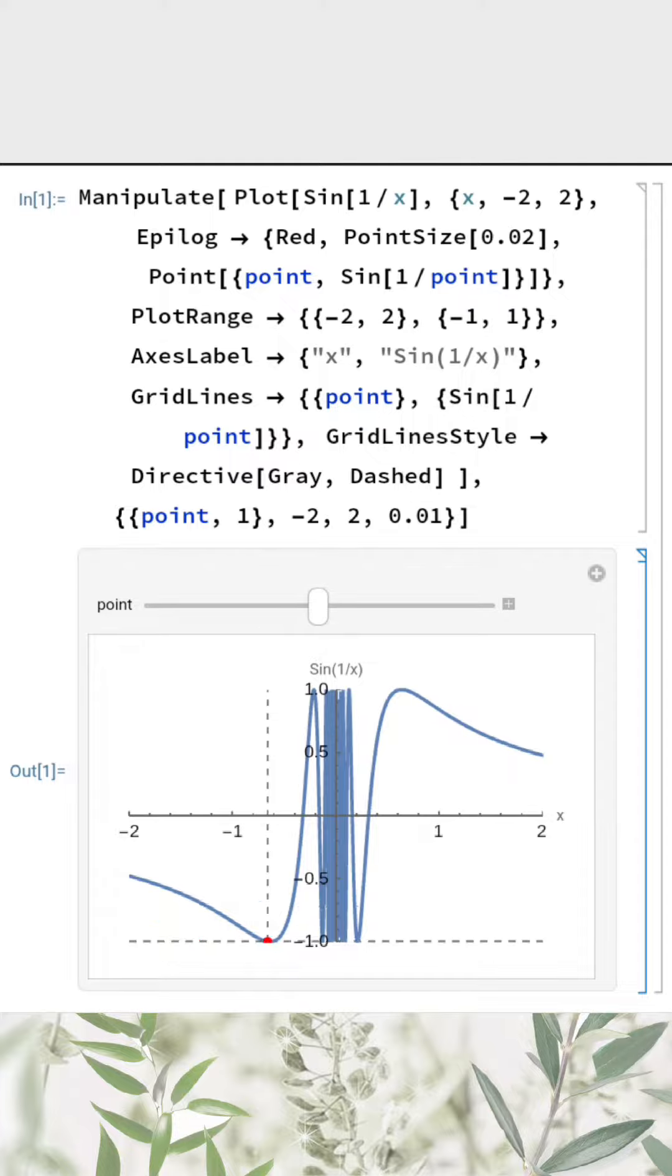Similarly, when x approaches zero from the right (positive values), the function swings become even more rapid, with no clear, consistent value.